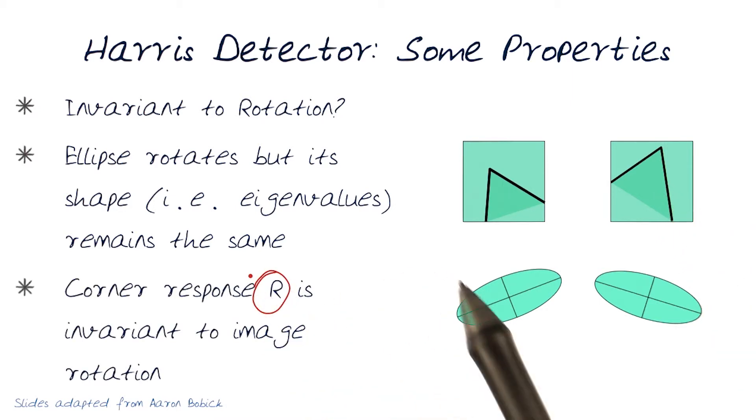Since r is only dependent on the eigenvalues of the ellipse, it basically suggests that the corner response function r is invariant to image rotation.